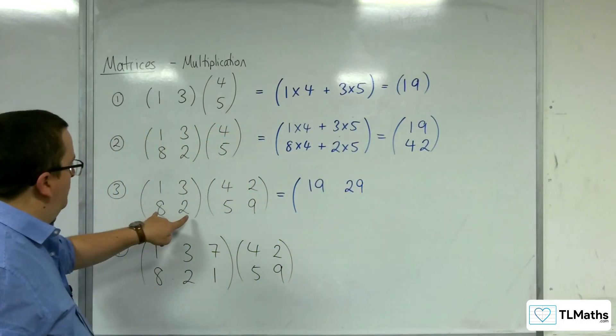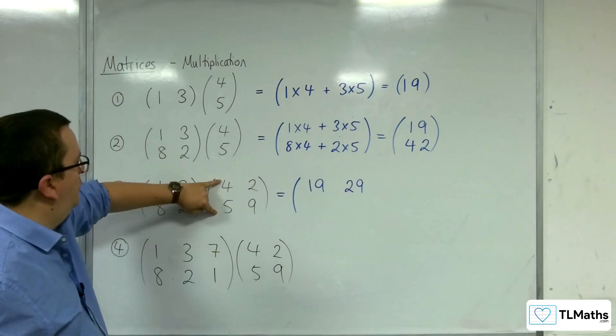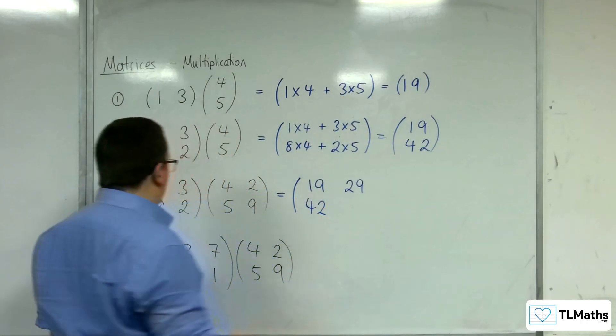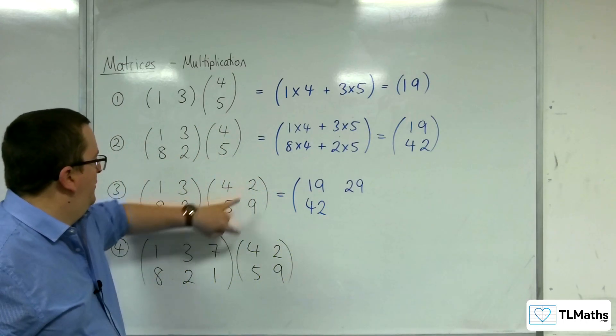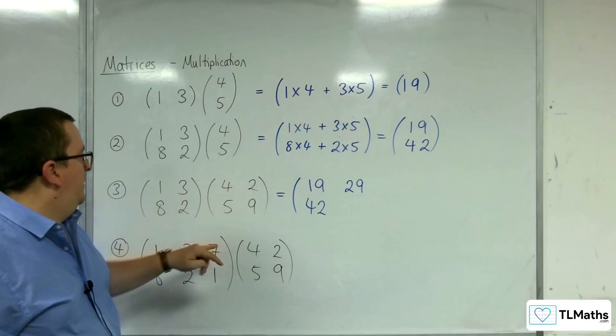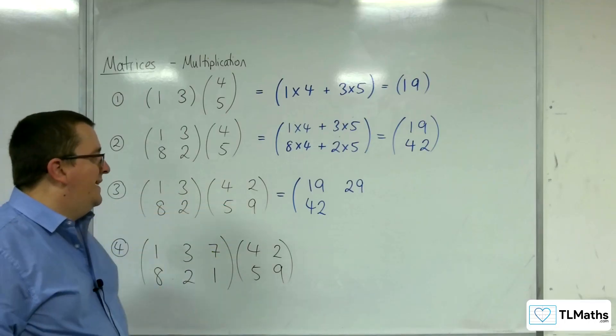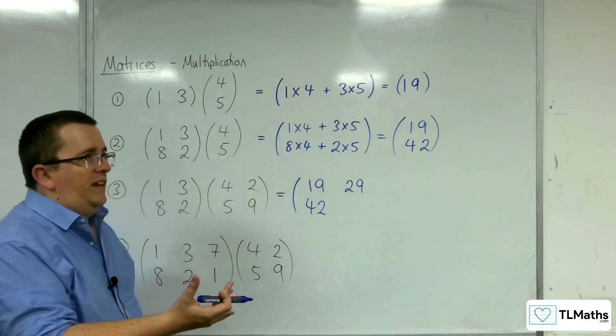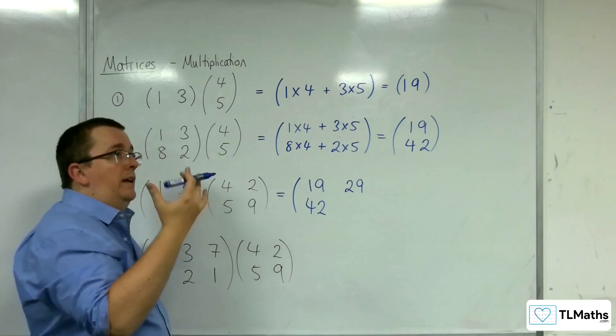Now, in the bottom row, 8, 2 times the 4, 5. We know it's going to be the 42. Then, 8, 2 times the 2, 9. 8 lots of 2 is 16. 2 lots of 9 is 18. 18 plus 16 is 34.